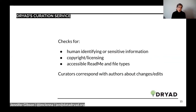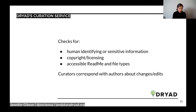The data is then handed over to our team of curators, who interface with the author. They first check the data for sensitive information — we don't publish anything that includes identifiable human subjects or location data for endangered species. We also make sure there isn't anything in the package that can't be licensed under a CC0 license, which is the default for the Dryad platform. Then they check that file types are as accessible as possible using open software formats, and that the README is something anyone can pull down and review.